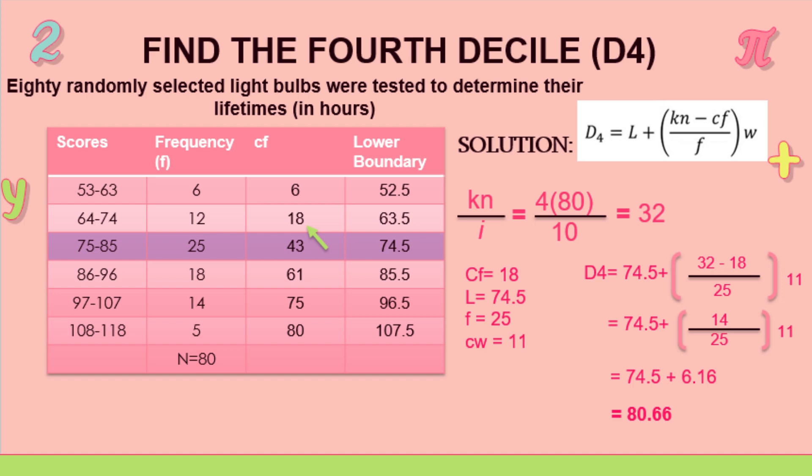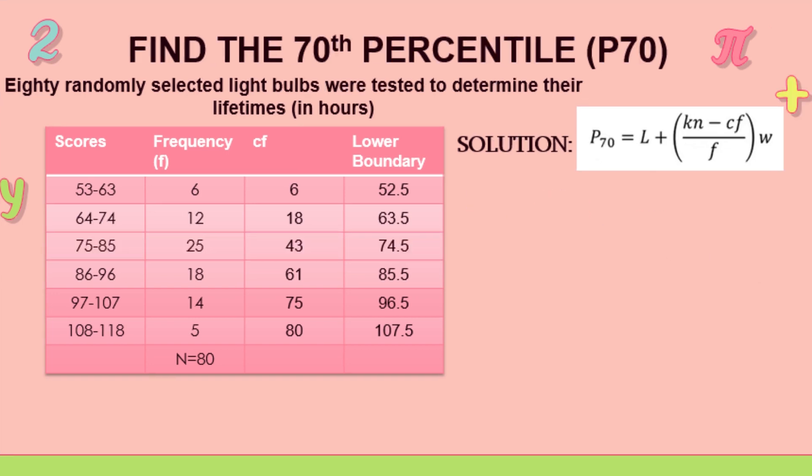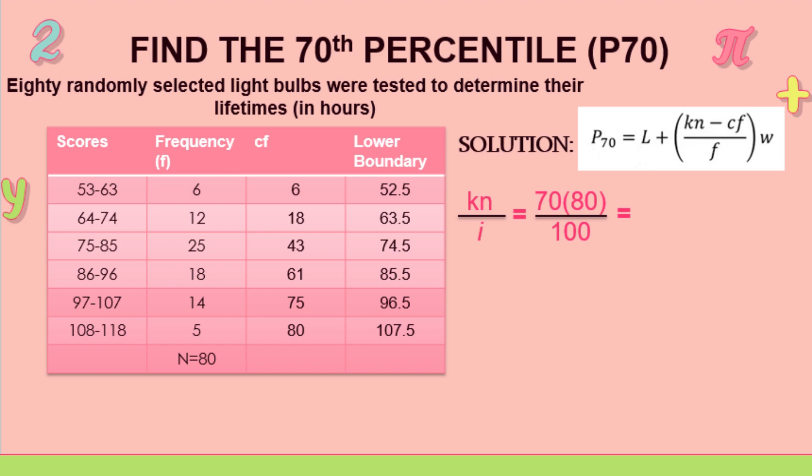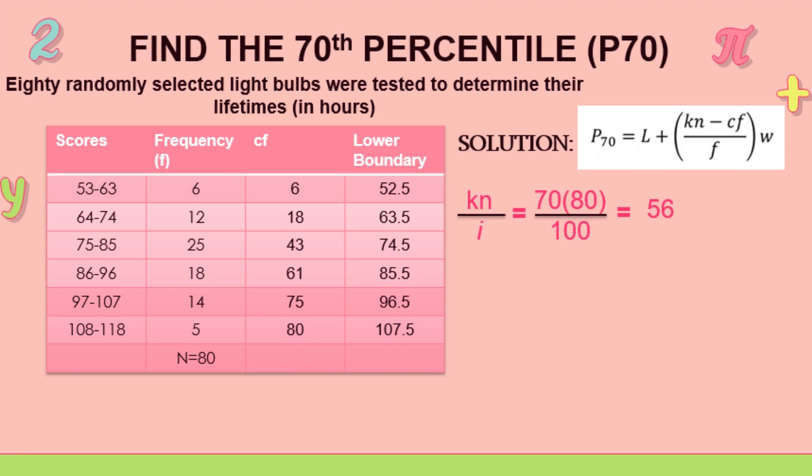And for our last and third example, we have to find the 70th percentile. So still same scores and frequency, but different this time, different solution because we're going to use 70 and 100. So 70 times 80 over 100 is 56. So that's what we're going to look for in the cumulative frequency.